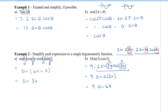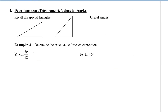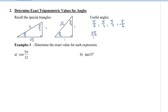Now let's find exact trigonometric values for angles beyond the standard π/6, π/3, and π/4, using our special triangles. The key insight is that π/2, π/3, π/4, and π/6 all have a common denominator of 12, so we rewrite them as 6π/12, 4π/12, 3π/12, and 2π/12 respectively, and find combinations that sum or differ to give our target angle.